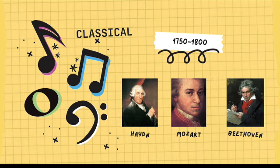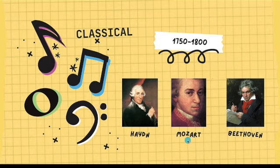The Classical era is from 1750 to 1800. Some notable classical composers include Franz Joseph Haydn, Wolfgang Amadeus Mozart, who wrote this piece, and Ludwig von Beethoven, who's known for Fur Elise.